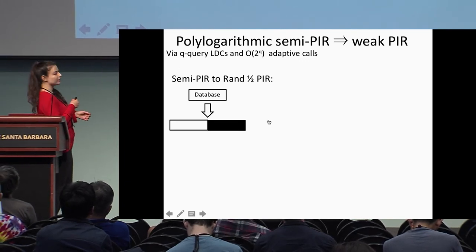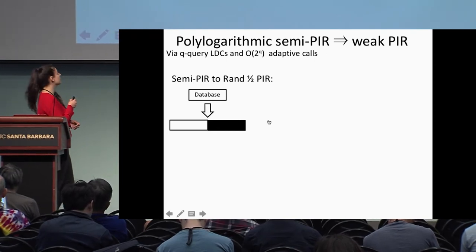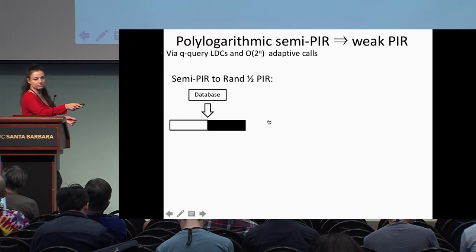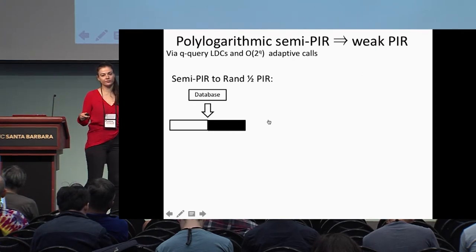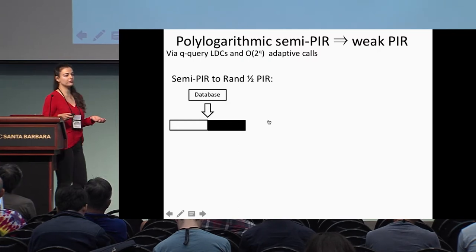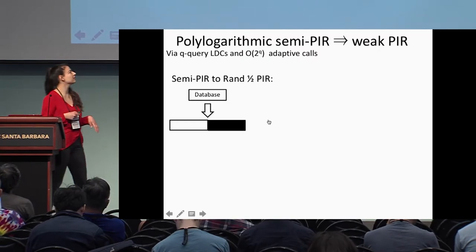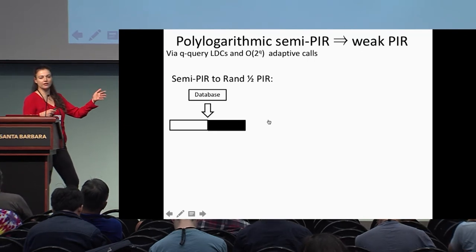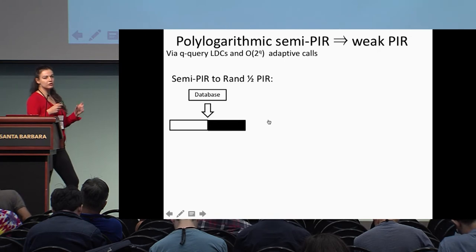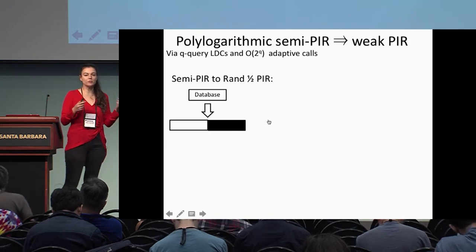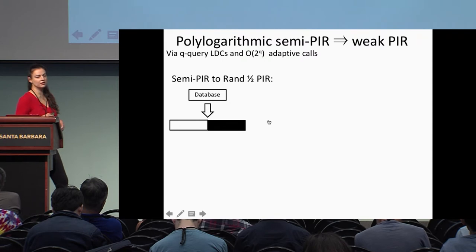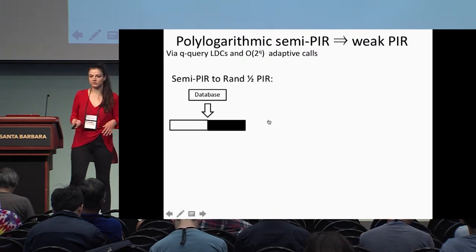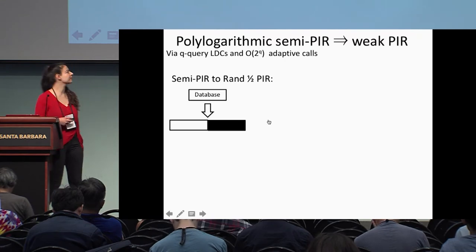To do this, we double the database by appending its complement. So if the database is 00011, we add 11100. If the client wants entry i, they query either entry i or entry i + n, where n is the database size. One of these will be zero and one will be one because of the complement, so with probability one half the server learns index i.